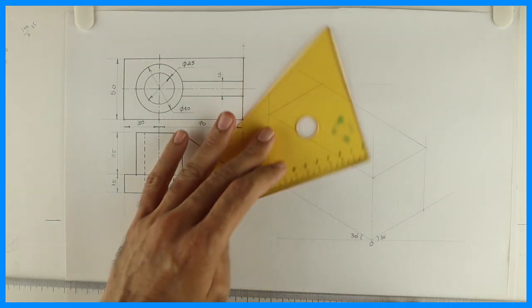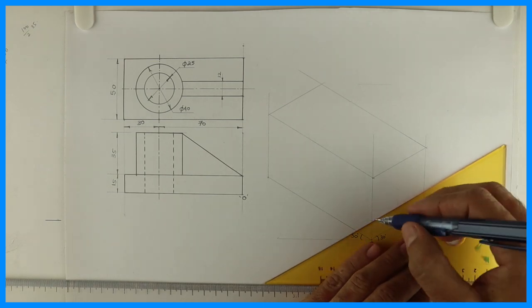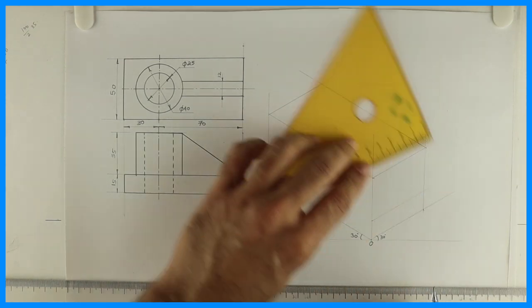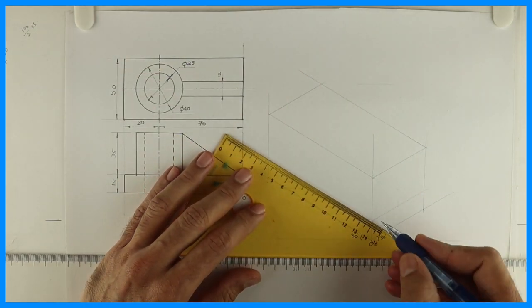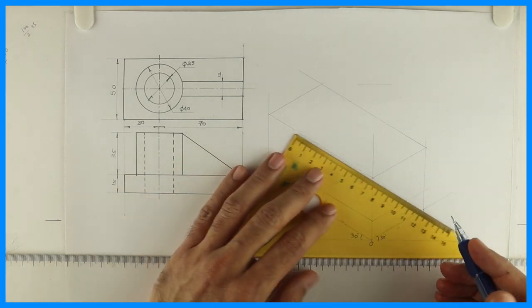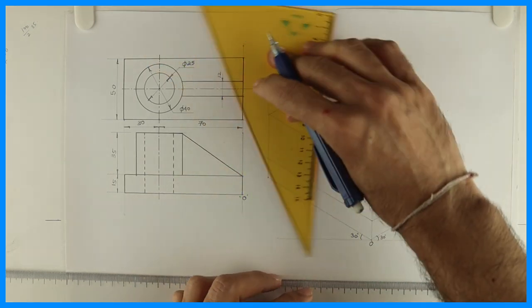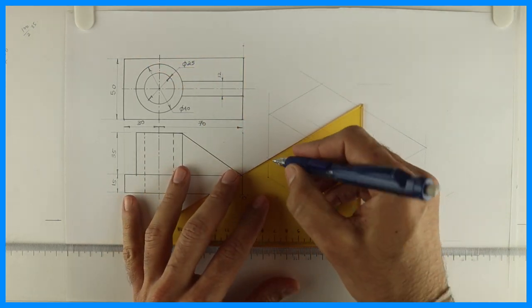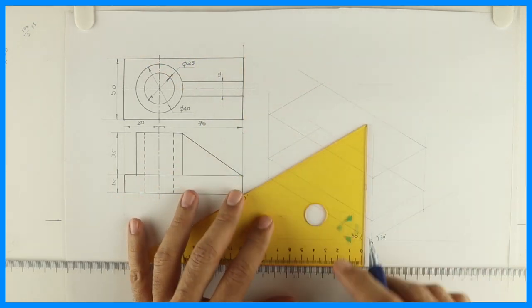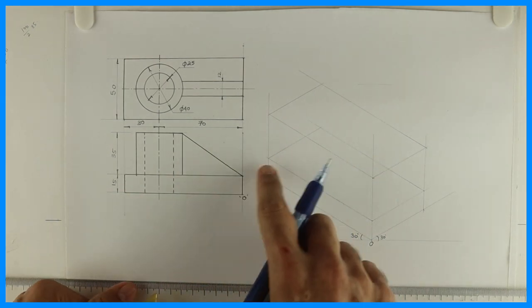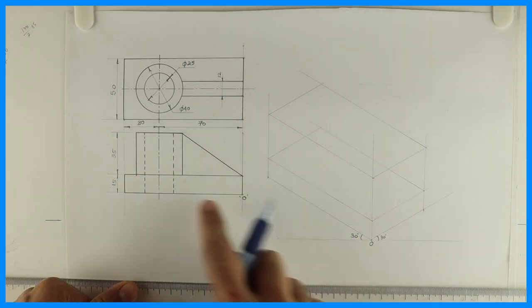So height is 15. So we'll take 15. Now remember one thing, whatever is there in the front, the same thing is behind. So if you see in front view, it's just a rectangle. So behind also it will be a rectangle. How much you have to go behind? 50. So part 1 is done. You should always take part by part. See this. Part 1 is done.